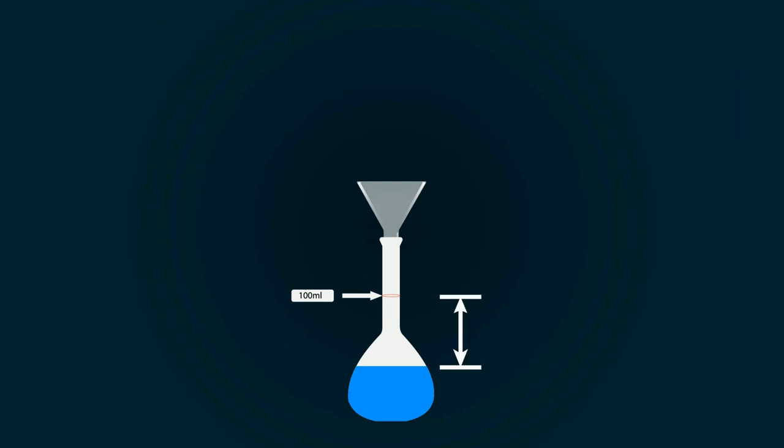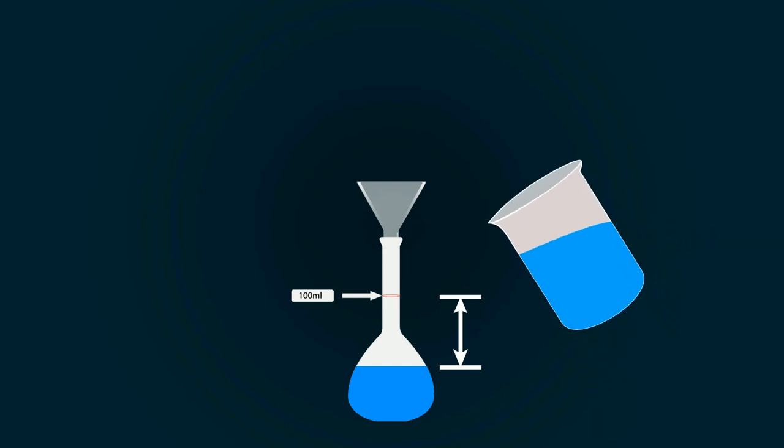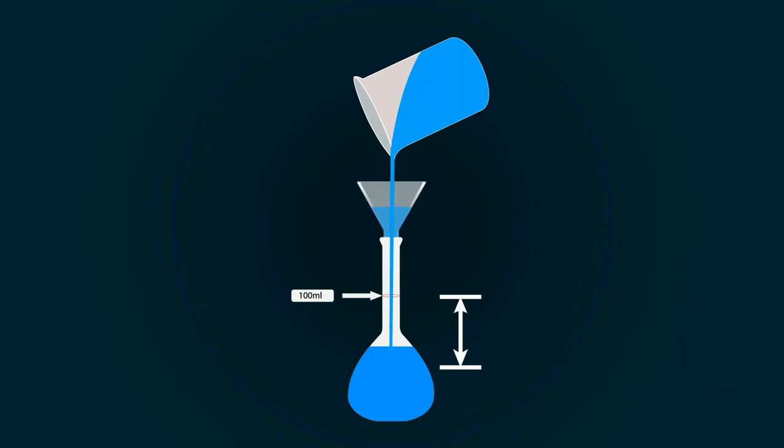For that you have to add more ethanol in it. So take some more ethanol into an empty beaker and start pouring it into the measuring flask to fill it up to the 100ml point.